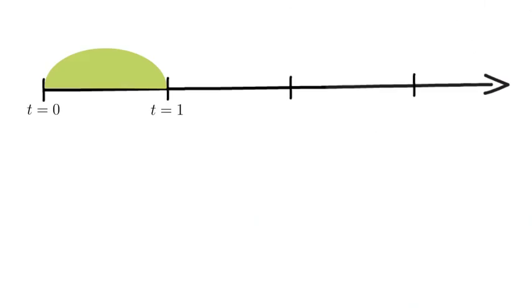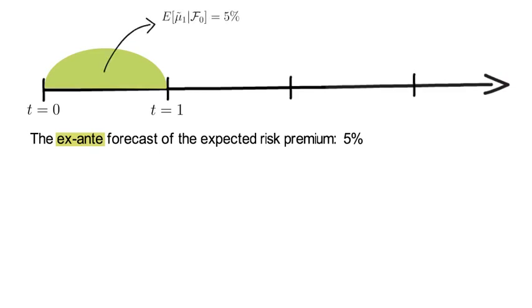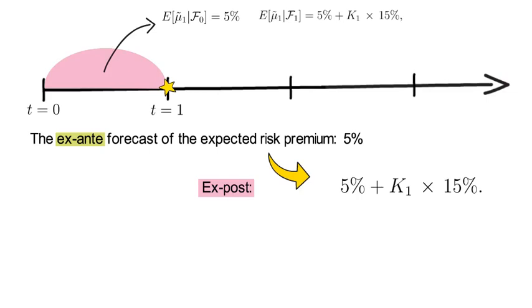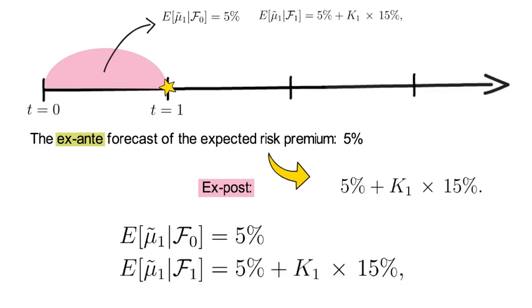So now let's go back to where we stopped. We had a 5% ex-ante forecast for the expected risk premium between the trading period t equals 0 and t equals 1. Now in t equals 1, after seeing the 15% measurement error, the 15% prediction error, that forecast should be updated as follows: 5% plus the optimal learning rate times the 15% prediction error. So we could therefore write that the expectation of μ̃_1 conditional on F_1 was 5% plus K_1 times 15%, where the realized return r̃_1 is part of the F_1 information set.